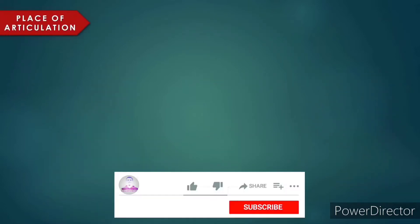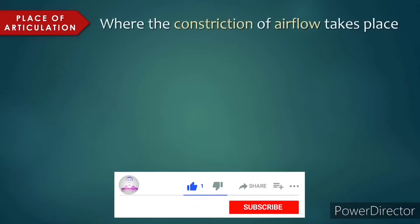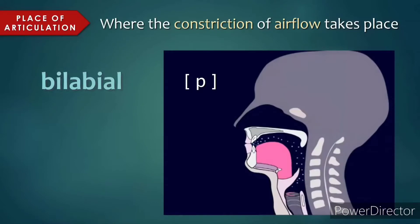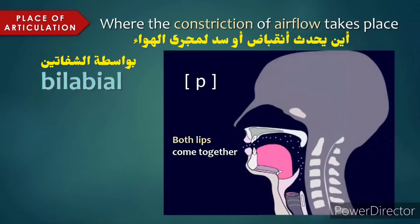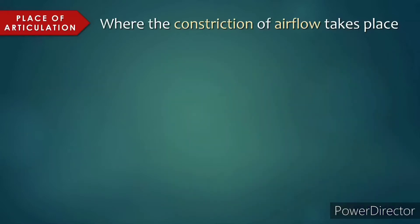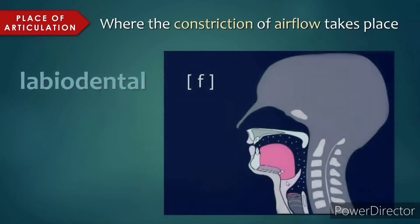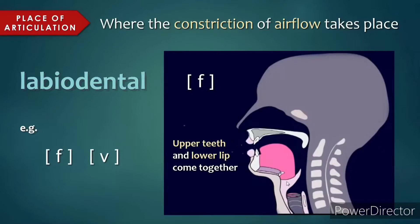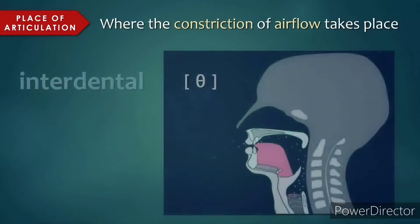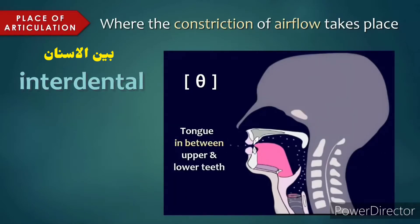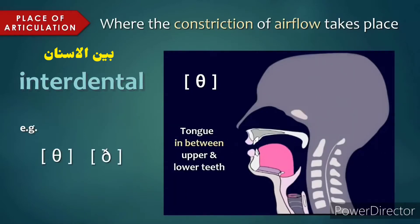Place of articulation refers to where in the vocal tract the constriction of airflow takes place. Bilabial sounds are produced with both lips, like p, b, m. Labiodental sounds are produced with the upper teeth and the lower lip, such as f, v. Interdental sounds are produced with the tongue in between the upper and lower teeth, such as th.